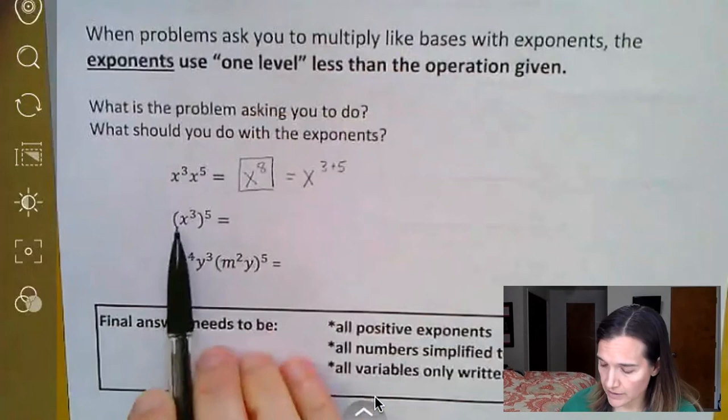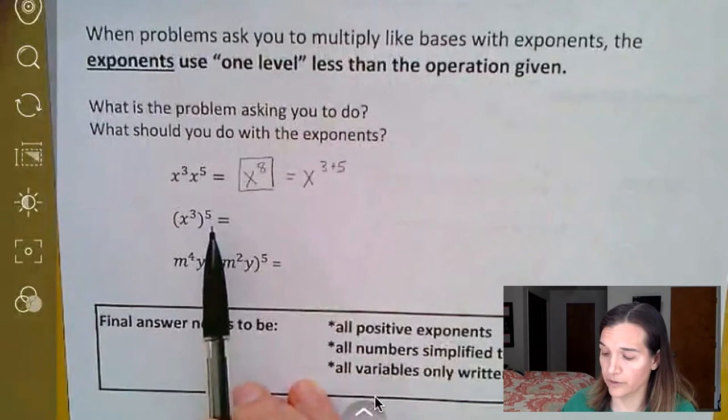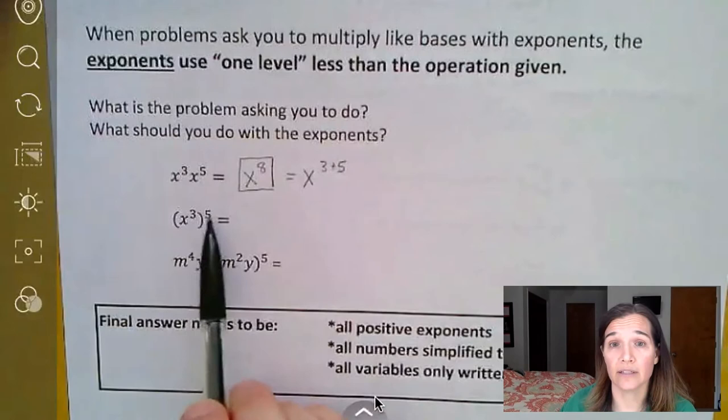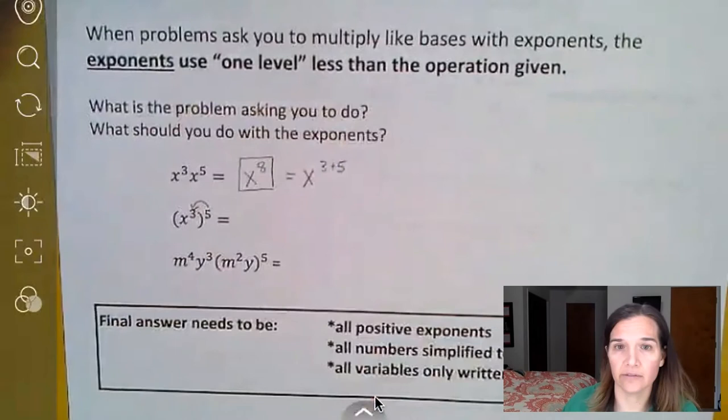This one is x to the third power to the fifth power, or x cubed to the fifth power. And in that case, again, we're taking a power to a higher power. That's exponents. So we do one less than exponents, which is multiplying.